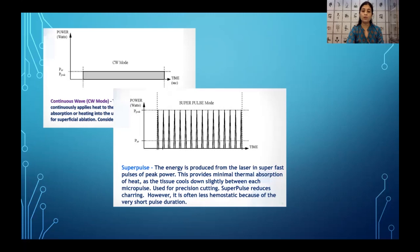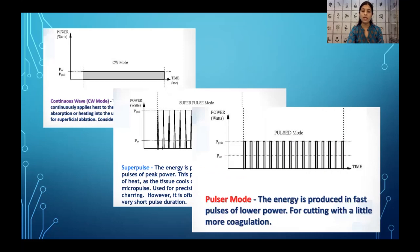The superpulse mode is when the energy is produced in superfast peaks or pulses of peak power. The energy rises, reaches the peak, and quickly falls down — a cone-shaped peak — very useful for precise cutting. However, since the peak energy is maintained for a very short pulse duration, it does not have much hemostatic capacity. The pulsar or ultrapulse mode has a rectangular peak, meaning the peak energy is sustained for some amount of time, which gives it good coagulation ability as well.